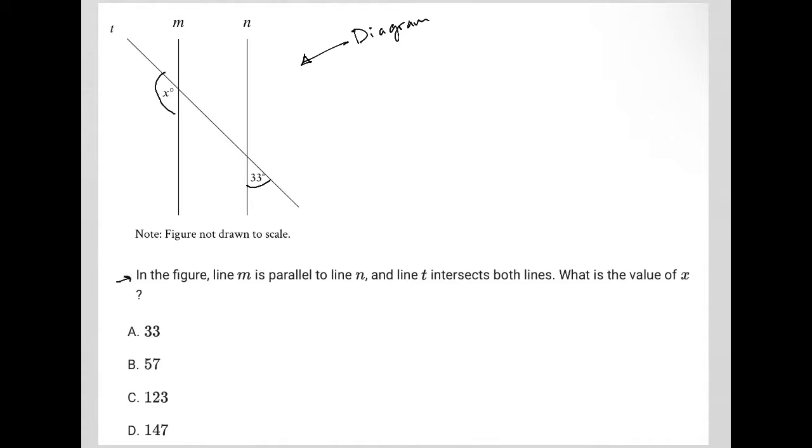The question says in the figure line M is parallel to line N. That's important because as long as these two lines are parallel, I can make some assumptions about the angles formed by this transversal that crosses those two parallel lines. One is that if this is 33 degrees, so is this. That's also 33 degrees based upon those angles being vertical angles.